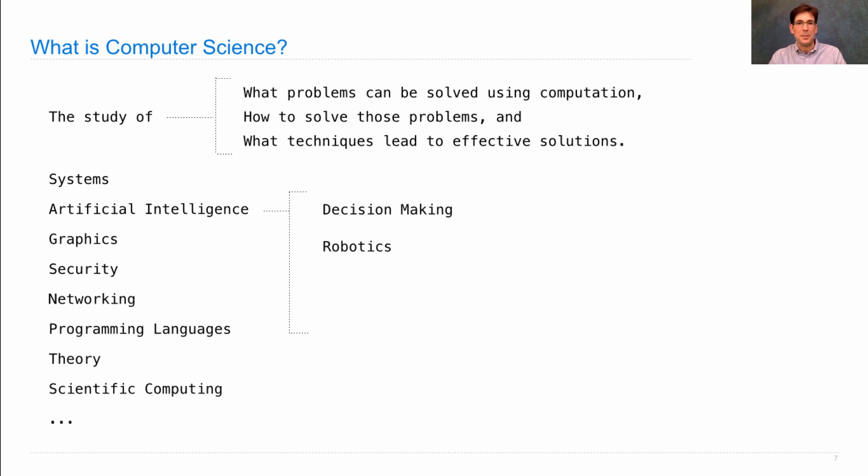Robotics is about building self-driving cars and robots that can fold your laundry for you. Natural language processing is the study of how to get computers to work with natural languages, such as English or Chinese.